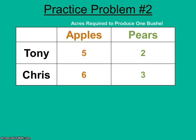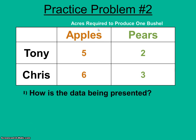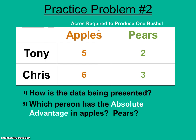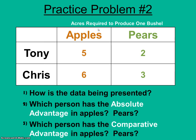Practice problem number two is set up a little differently. Here we see the number of acres required — the number of inputs required — to produce one bushel of output. Therefore the inputs are varying and the outputs are constant, so you're going to do your math differently: pull those numbers under instead of over. Figure out who has the absolute advantage in apple and pear production, then after doing the math, who has the comparative advantage in apple and pear production.